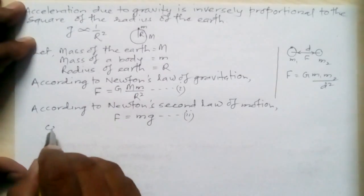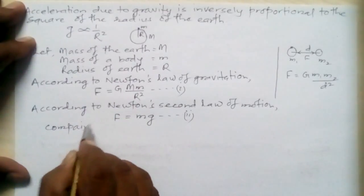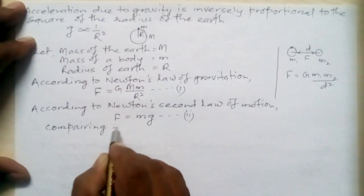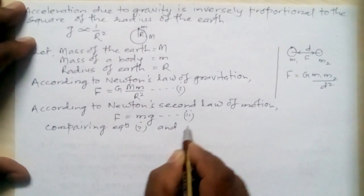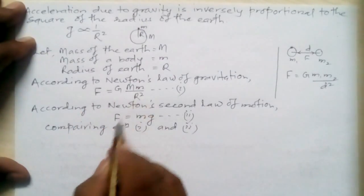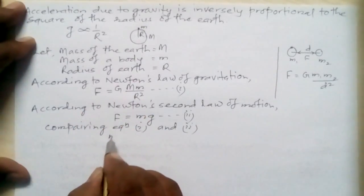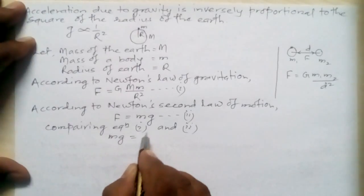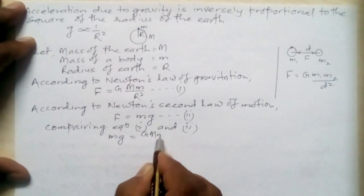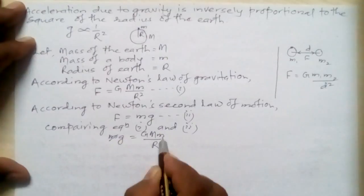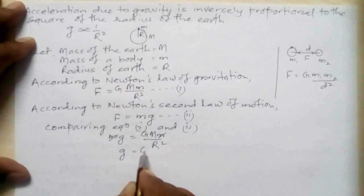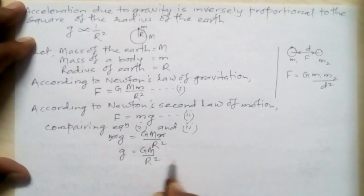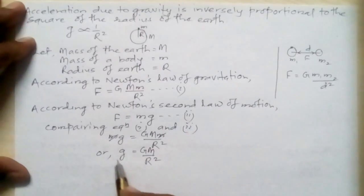Comparing equation one and two: since both equal F, we get mg = G·M·m / r². The small m cancels from both sides, leaving g = G·M / r².